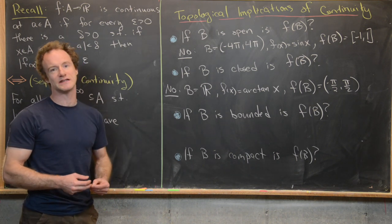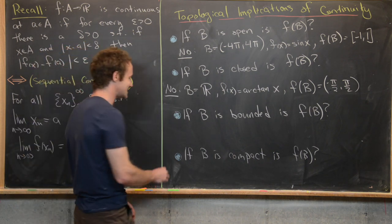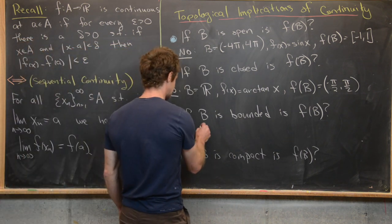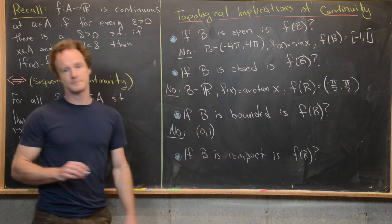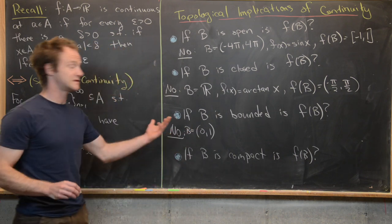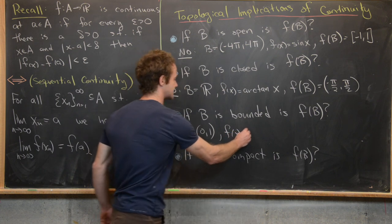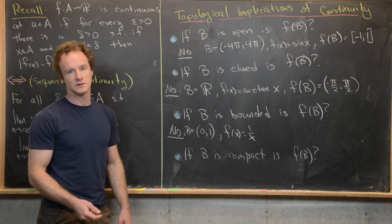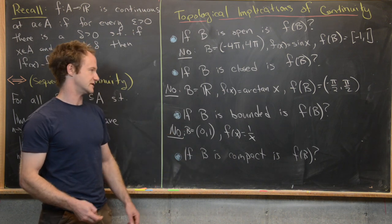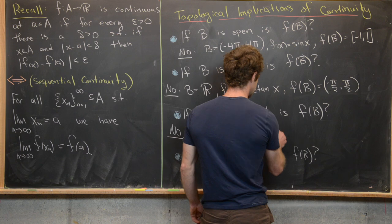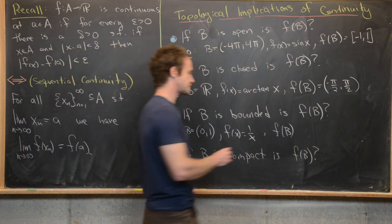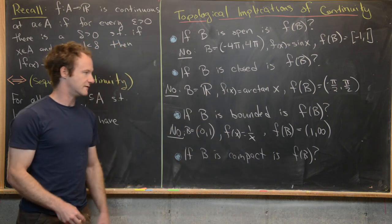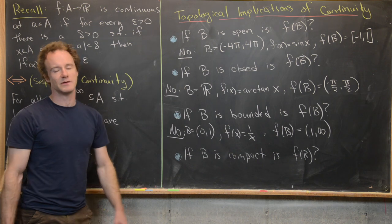Next: if B is a bounded set, is f(B) bounded? The answer is also no. Consider B to be the open interval (0, 1), which is definitely a bounded set, and take f(x) = 1/x. This function is continuous everywhere on that open interval — it's not continuous at zero, but we're not including zero. The image f(B) is the interval from 1 to infinity, which is unbounded above. So here the set was bounded but the image is unbounded.